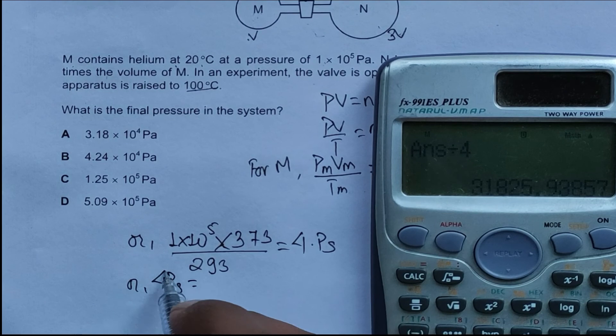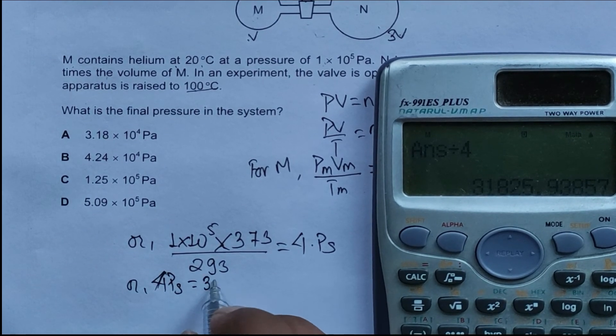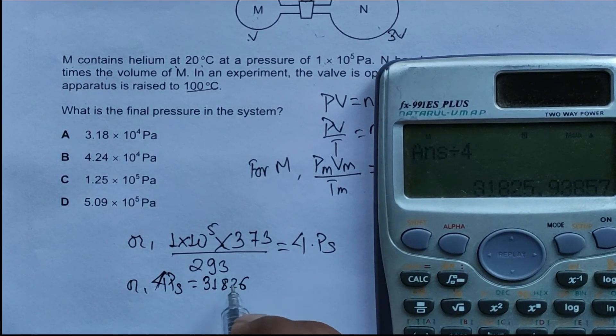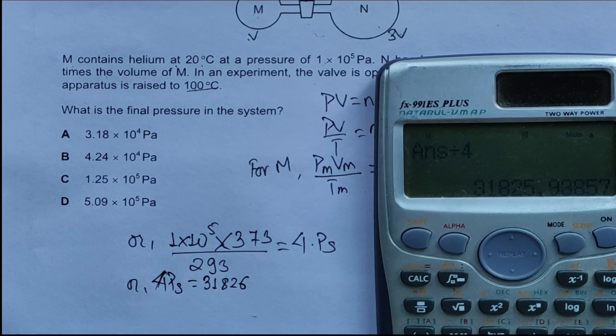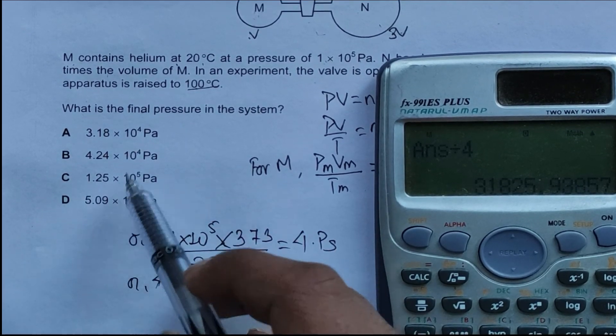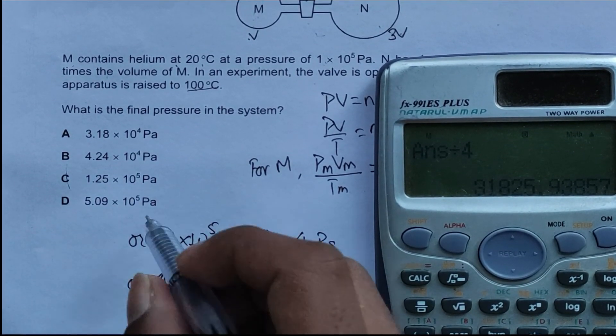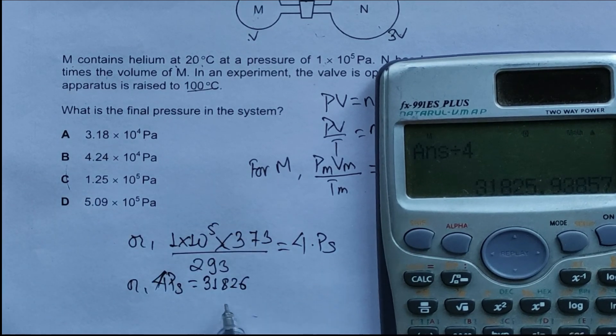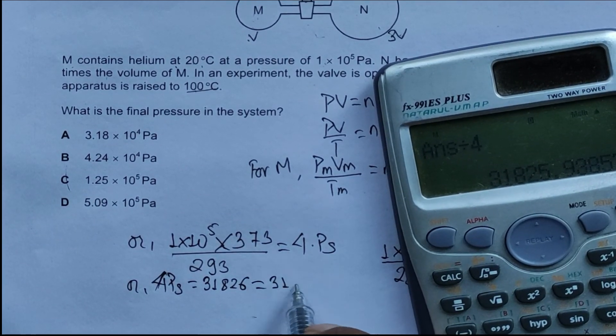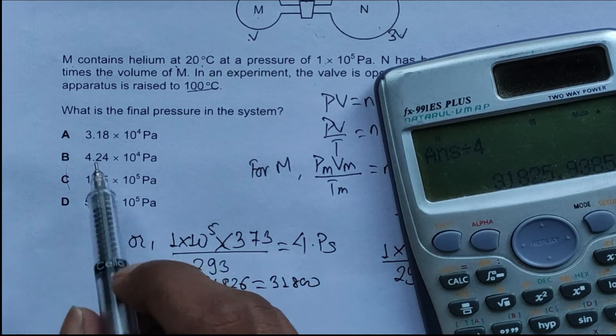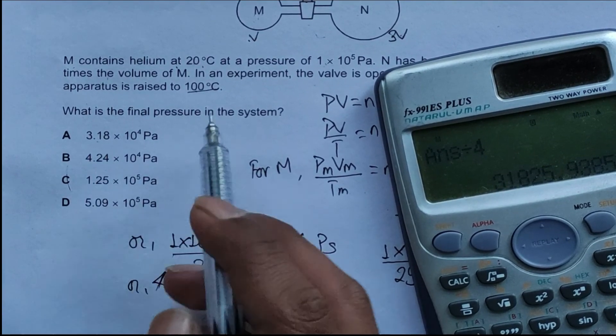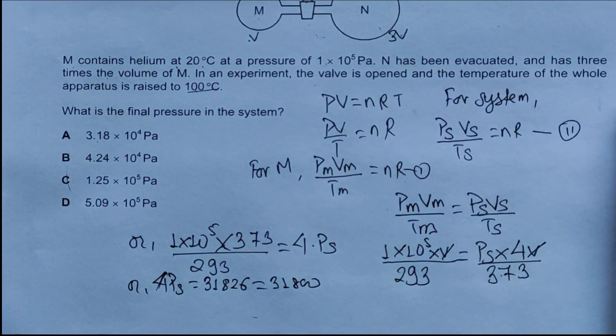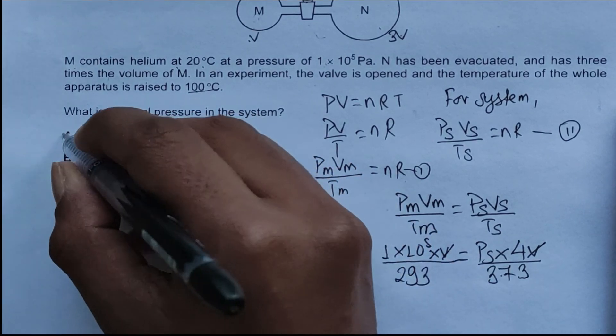Let's call this 31826, and if we convert this to three significant figures, this is 31800, which equals 3.18×10^4 Pascals. So this verifies A is our final correct answer.